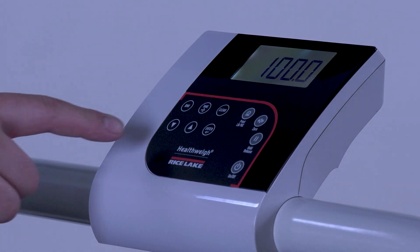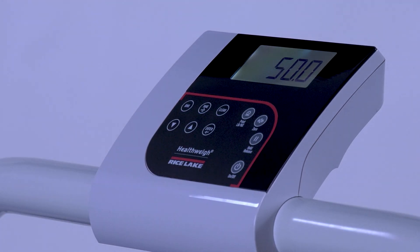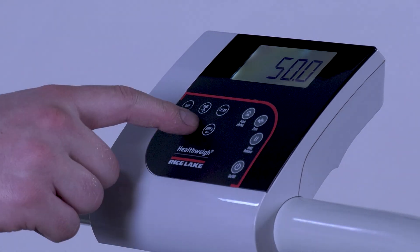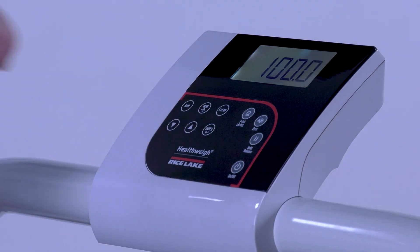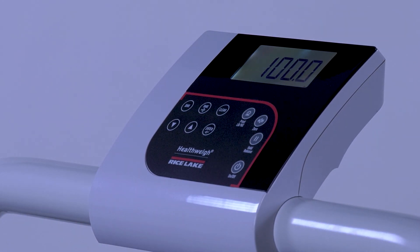Press the Up or Down key to toggle between pounds and kilograms. Once you have selected the desired unit, press Enter to confirm. This is the amount of weight you will be using for calibration.